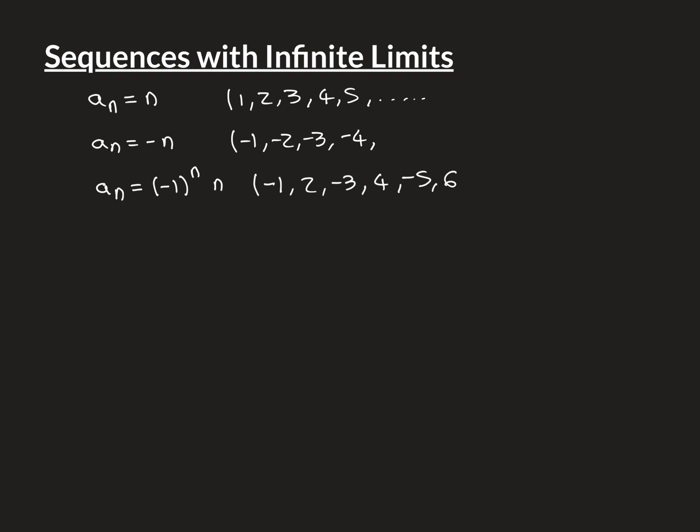Let me draw a picture of the real line. Here's the real line. So this sequence looks like this: here's minus 1, then 2, then minus 3, then 4. The even terms are going to go off in the positive direction indefinitely, and the odd terms are going to go off in the negative direction indefinitely. This is a very badly behaved sequence. We do not want to say that this thing tends to plus infinity or tends to negative infinity — it's doing both. One subsequence is tending off to plus infinity and one subsequence is tending off to negative infinity.